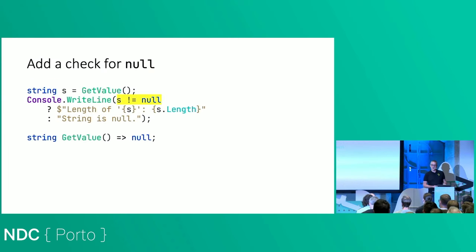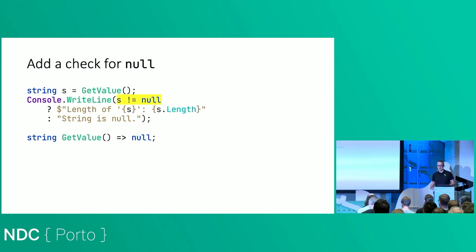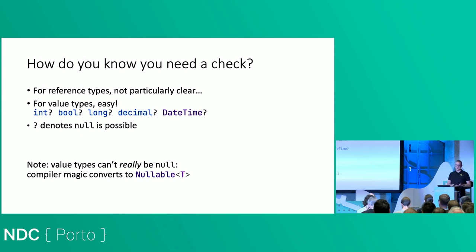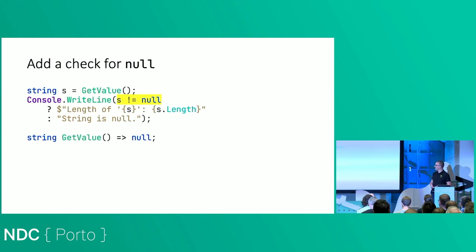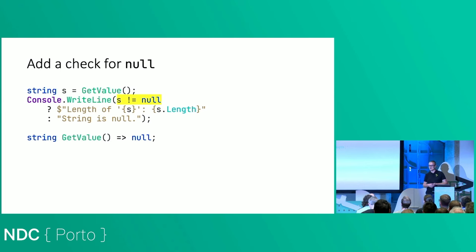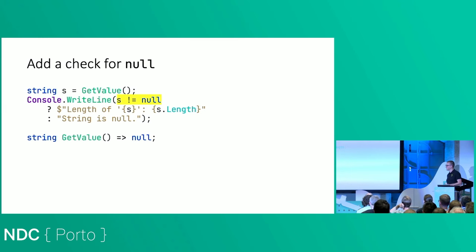How do you overcome that? Well, you typically add a null check — you say if that string is not null, print the length; otherwise take a different branch. But how do you know you need a check? For reference types, it's not particularly clear. In this simple example you can see getValue is returning null, but in a real code base with method calls and method chains, it's close to impossible to figure out that something can be null. Ideally you should be doing null checks at every point because you have no idea if that variable is going to be null or not.